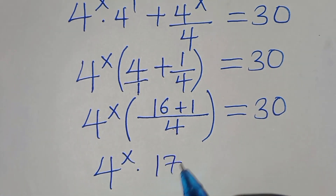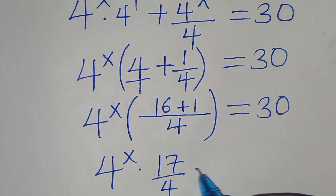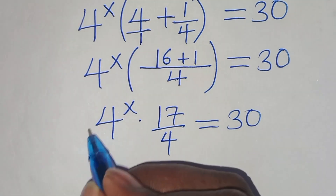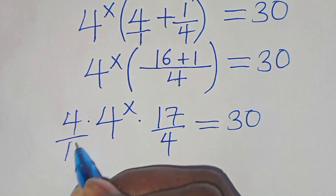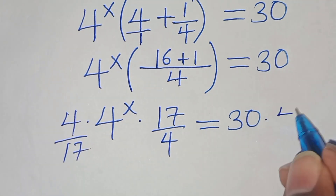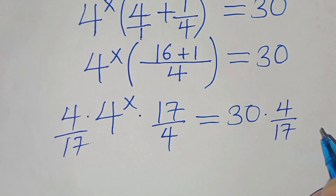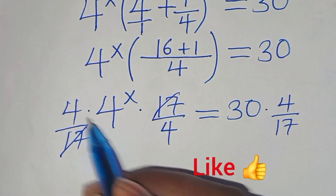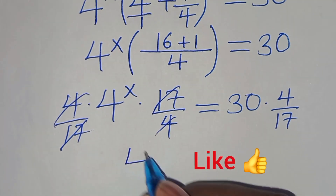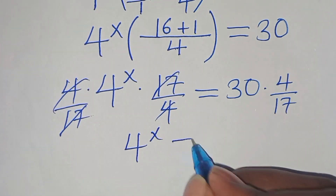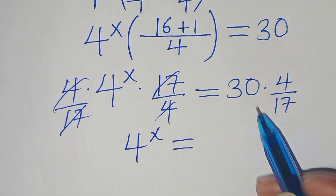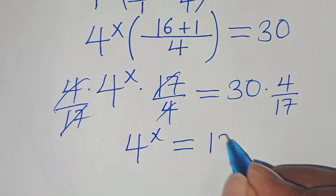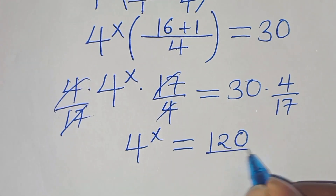So we have 4^x multiplied by 17 over 4, equals 30. The next step is to multiply both sides by 4 over 17. Simplifying, we get 4 to the power of x equals 30 times 4, which is 120, over 17.